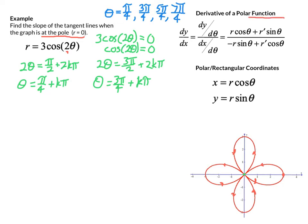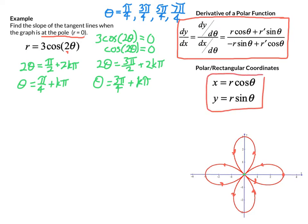The tangent line slope dy/dx is defined parametrically as (dy/dθ) / (dx/dθ). The key to understanding the derivative formula for polar functions is to think of the polar function in its parametric form. That goes back to trig functions of any angle, which tells us x = r·cosθ and y = r·sinθ. So the way I like to find dy/dx for a polar graph is to define the polar function in its parametric form and then do the derivative parametrically.